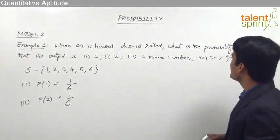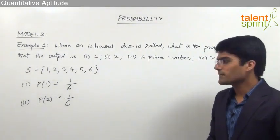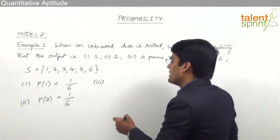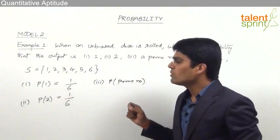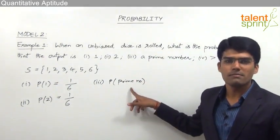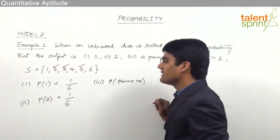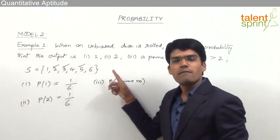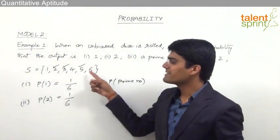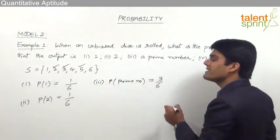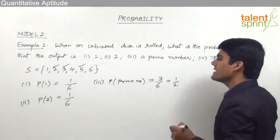The third question asks: what is the probability that the output is a prime number? From the sample space, the prime numbers are 2, 3, and 5. If we get any of these three outputs, we are successful. So there are 3 outcomes in favor of getting a prime number out of a total of 6. The probability is 3/6, which simplifies to 1/2.